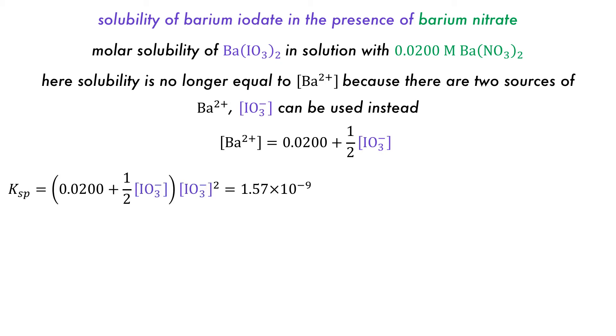This can then be substituted into the solubility constant expression for the iodate salt, which gives a cubic equation. Because the concentration from the iodate salt is expected to be small, an approximation that it will have a negligible effect on the solubility of the barium iodate means that this cubic equation can be simplified.